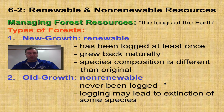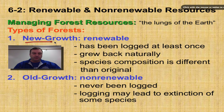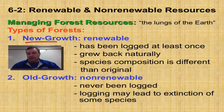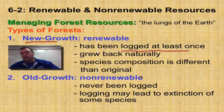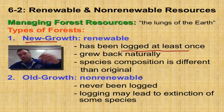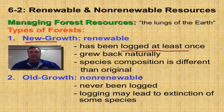Forests come in two types. Number one is new growth — a forest that has been logged at least once and was allowed to grow back naturally. These are renewable: cut down the trees, maybe plant some new ones or let them come back naturally, and 20, 30, or 40 years later you can cut them down again. It's a renewable, sustainable resource.